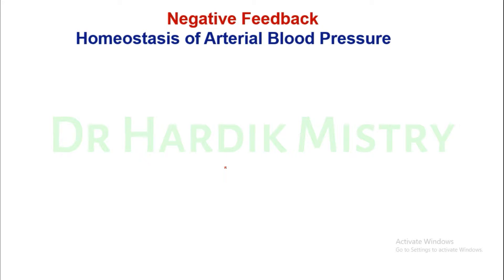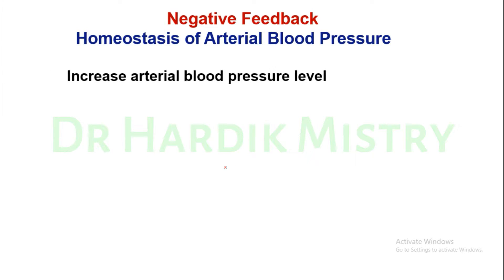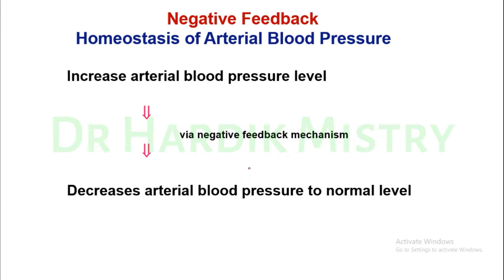Negative feedback loop: homeostasis of arterial blood pressure — how our body maintains arterial blood pressure at a normal constant level. If there is an increase in arterial blood pressure due to some abnormal condition, the negative feedback mechanism works to decrease arterial blood pressure back to a normal level.